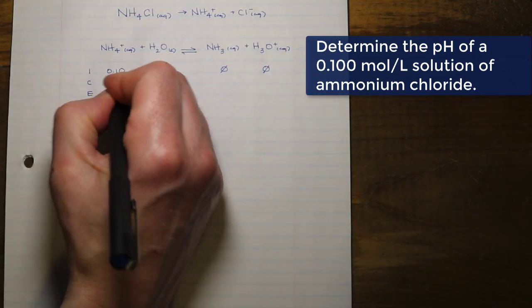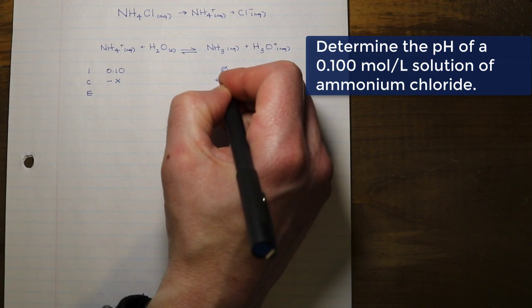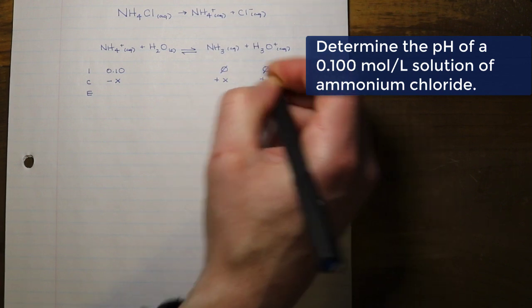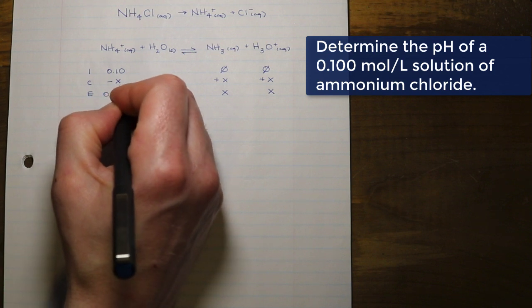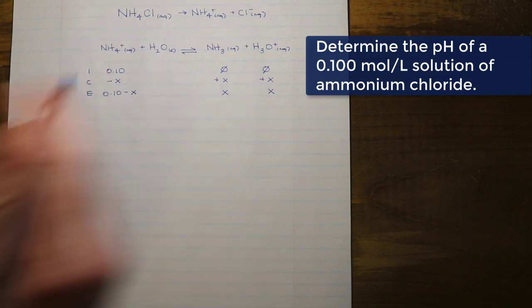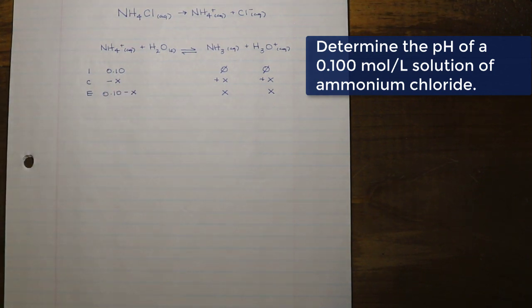The only place for this to go is down, the only place for these concentrations to go is up. So you're going to notice that this table sets up very similar to just about every other acid-base table that you might come across in terms of weak acid or base analysis, and we have our equilibrium concentrations.